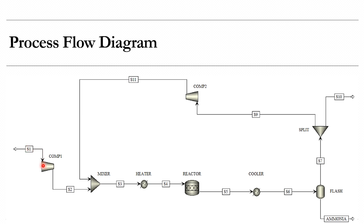The feed is initially compressed and sent to a heater, which actually plays the role of a cooler — it brings the temperature down from stream S3 to stream S4. In the reactor, which is the stoichiometric reactor used in Aspen Plus, 60% conversion of nitrogen takes place. The products from this reactor are cooled in a cooler, then the mixture is sent to a flash separator where separation takes place using Flash 2.